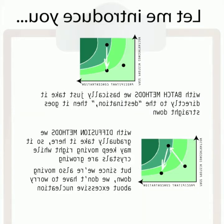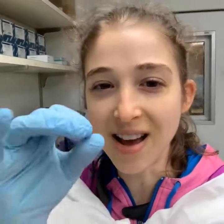Quick note: before I mentioned you can send samples off to a facility for high-throughput screening. Often they'll use something called the micro-batch method. I've been talking more about vapor diffusion methods, where you gradually move into and then out of the super-saturated zone. With the batch method, you try to go directly to the perfect spot right away. The reason facilities use it is that it works at really tiny volumes — typically a drop placed under a layer of oil.